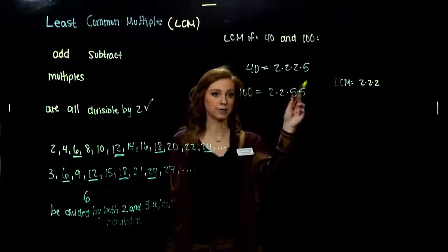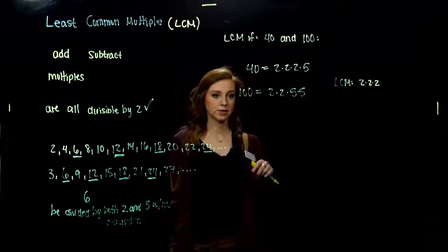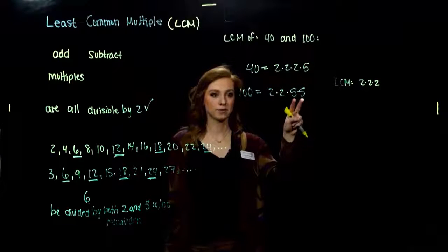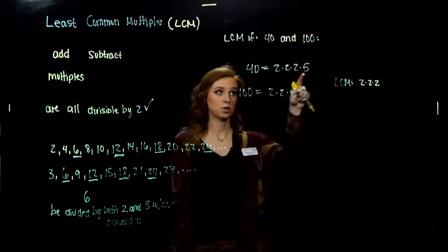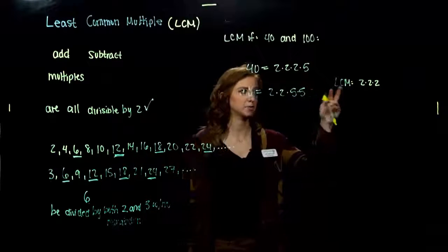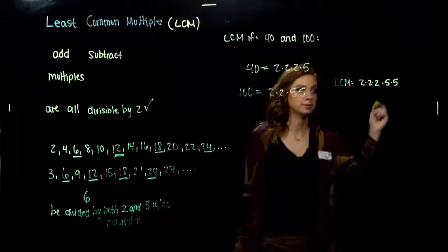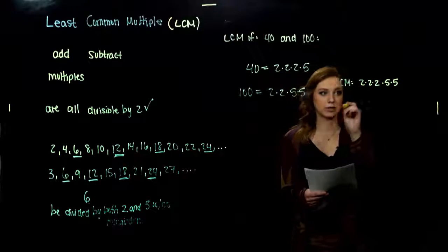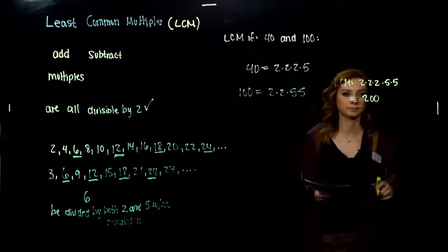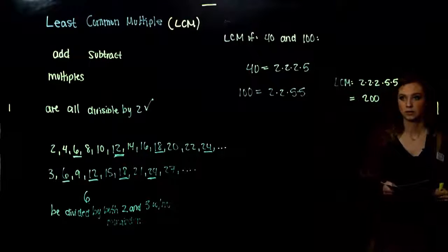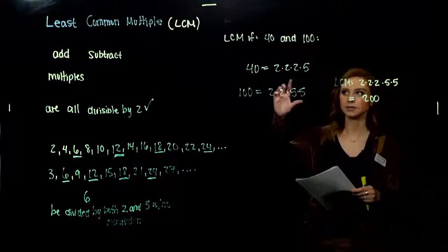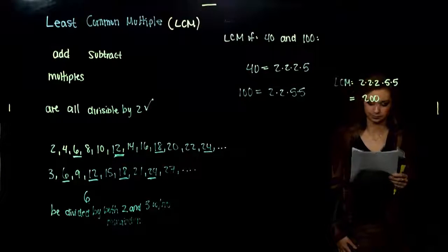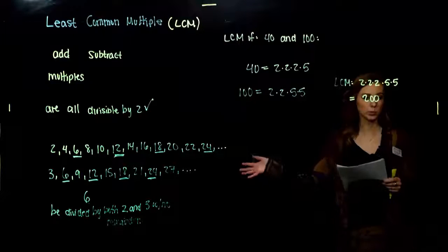What other factors do we have? The factor 5: the greatest number of times 5 shows up is twice — in 100 there are 2 factors of 5 and only 1 in 40. So the LCM of 40 and 100 is 2 cubed times 5 squared, which equals 200. That's one way — it gets us there.